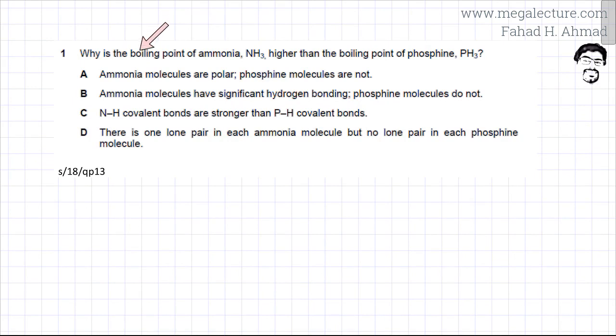Coming back to the question: why is the boiling point of ammonia higher? Ammonia has a higher boiling point compared to PH3 because ammonia has significant hydrogen bonding, whereas phosphine molecules only have permanent dipole interaction. Option B is the correct answer for this question.